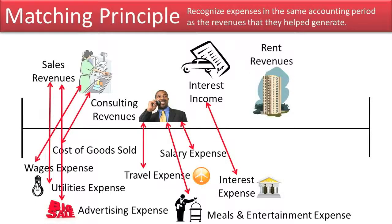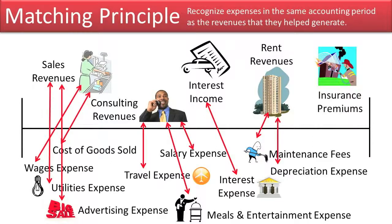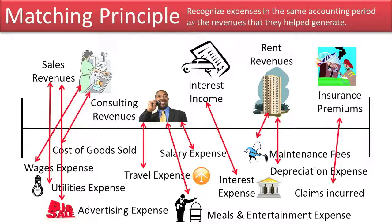Rent revenues — some of the related expenses to a landlord generating rent revenues are the maintenance fees as well as depreciation expense. This simply represents a spreading of the depreciable cost of the building over the many years that the building will provide benefits. Insurance premiums for an insurance company — some of the key expenses are the claims incurred and the benefits provided. So if they have to pay to rebuild someone's home because it burned down in a fire, that would be an expense called claims incurred.